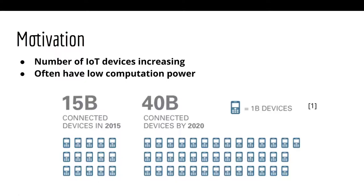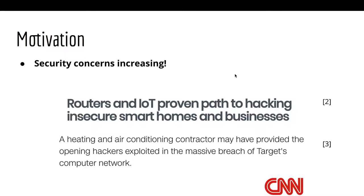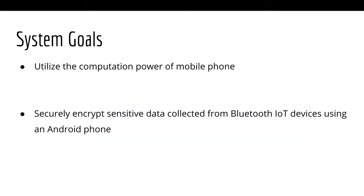The motivation for our project comes from the increasing number of IoT devices in the world. According to projections, by 2020, there's going to be 40 billion devices connected to the Internet. Due to energy consumption and cost issues, a lot of them are only going to be encrypted with very limited computation power. These IoT devices raise huge security concerns, and due to their low computation power, a lot of them are not going to be able to implement sufficient security features to defend themselves from potential hacks. So the goal for our system is to utilize the computation power of mobile phones and to securely encrypt sensitive data collected from Bluetooth IoT devices using an Android phone.